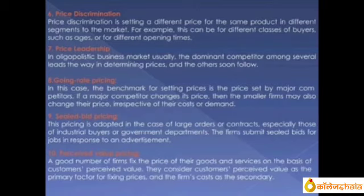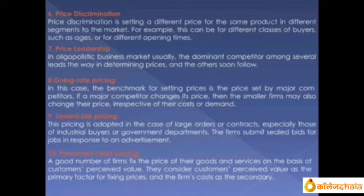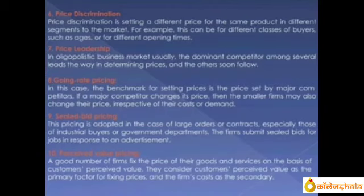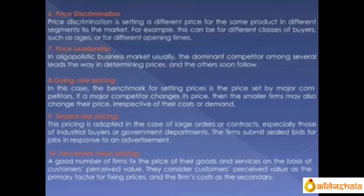Price discrimination can also be based on location. A woolen sweater in the Ludhiana market costs around 200 rupees, but the same sweater from Park Street in Kolkata costs around 700 rupees. Same product, different price due to location. Price discrimination can happen because of the type of buyer, different location, different age, or any other factor — whenever you're charged differently for the same product, it is called price discrimination.